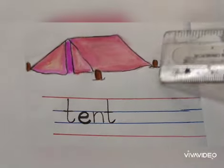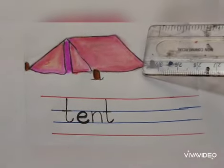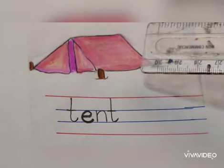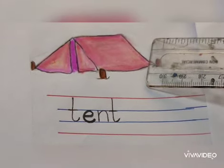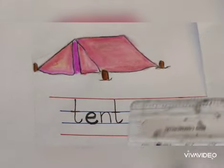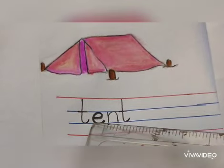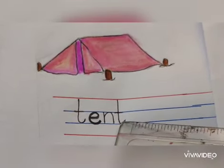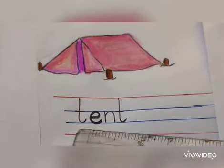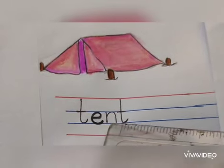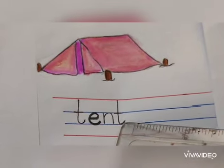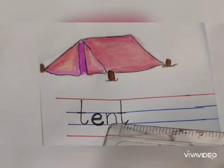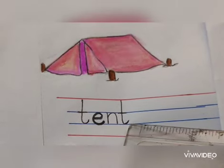See children, this is the picture of a tent. To spell the word tent, we will say T-E-N-T. Tent. T-E-N-T. Tent.